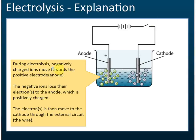So during electrolysis, the negatively charged ions move towards the positive electrode. The negative ion goes to the positive electrode, and the negative ions lose their electrons to the anode, which is positively charged. So when the negative ions go to the positive electrode, they will release their electrons — they give their electrons to the anode.